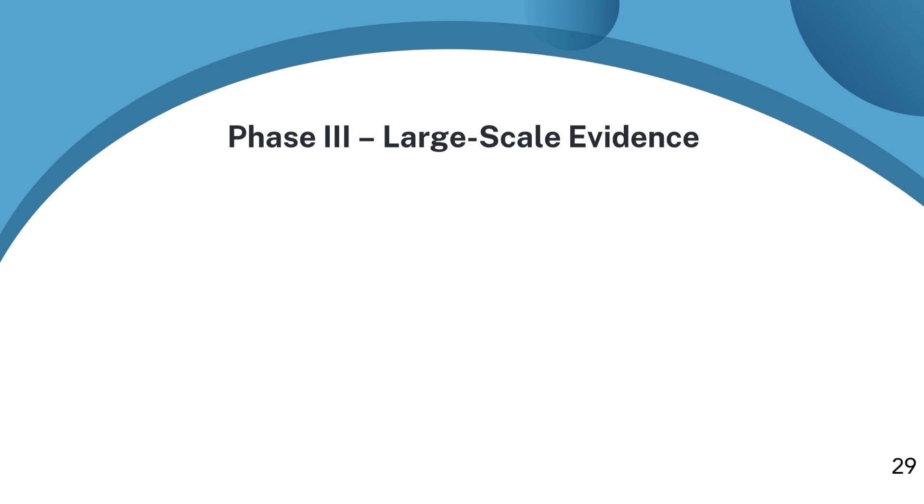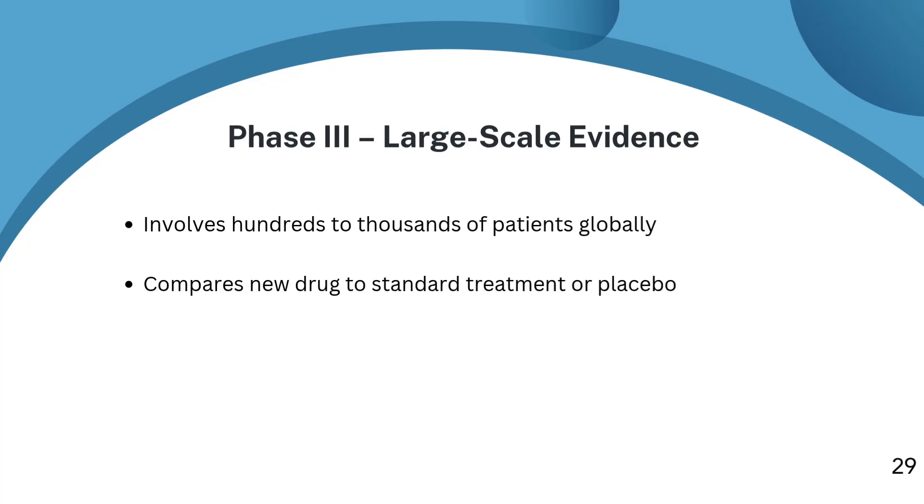Phase three: is it better than what we already have? Now we get to phase three. These are the large-scale trials, the ones that involve hundreds, sometimes thousands, of patients across different countries and hospitals. Here, we're looking to answer the big question: is this drug better than the current standard of care? These studies are often double-blinded and randomized. Patients may receive either the new drug, an existing treatment, or a placebo, depending on the condition being studied. Phase three is where we gather the evidence that regulators will review. We're measuring real-world effectiveness, closely monitoring side effects, and making sure the results hold up across large, diverse groups. This phase takes time, resources, and careful coordination. It's also the stage where things get exciting, because if the data is strong, the drug may be on its way to approval.